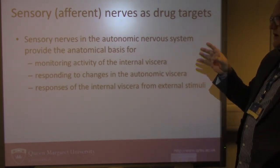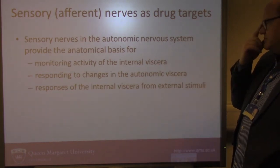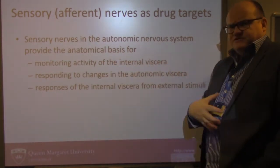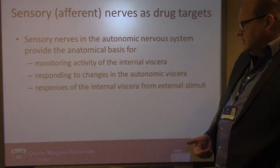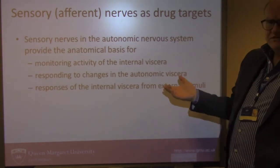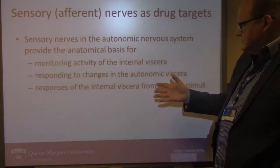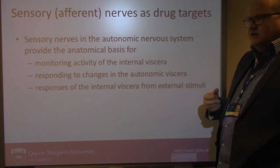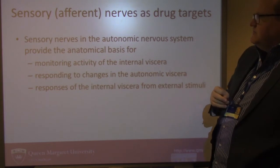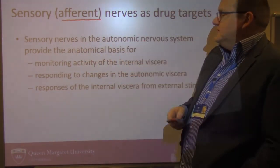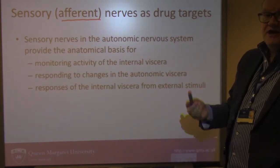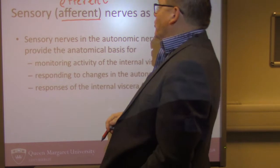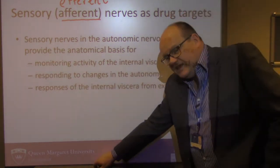The sensory nerves are basically providing information going up to the brain as part of this whole nervous system. What they're doing is monitoring the activity of the viscera — the internal organs — sending information to the brain about them. They're also allowing us to respond to changes in those organs and to external stimuli. That's why they're referred to as afferent neurons. Afferent means sending signals in the direction of the brain, as opposed to efferent ones, which carry signals from the brain. Afferent: to; efferent: away from.